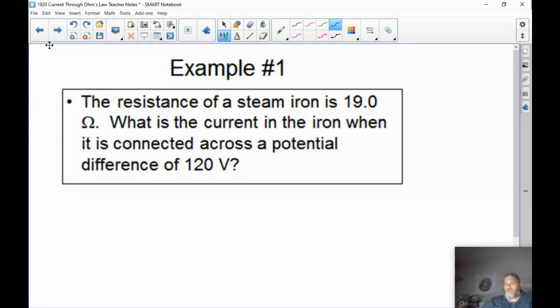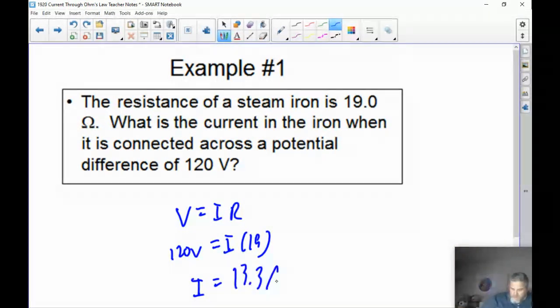Let's look at some examples. The resistance of a steam iron is 19 ohms. What is the current in the iron when it is connected across a potential difference of 120 volts? So V equals I times R. V is 120 volts. This is I times 19. And so we solve for I, divide both sides by 19. And we get 120 divided by 19 equals 6.3 amperes.